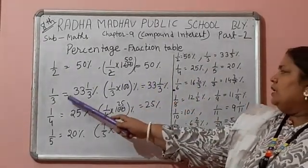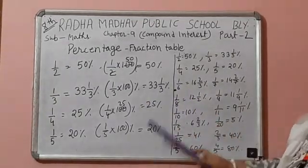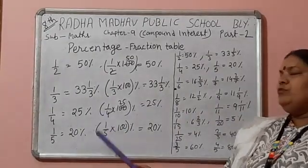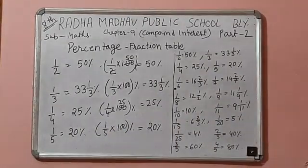1 upon 3, that means 33 over 1 by 3%, 1 by 4, 25%, 1 by 5, 20%. Now, how it is come?